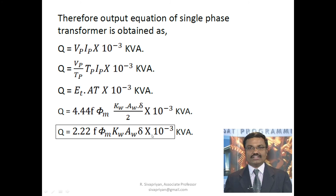This output equation Q = 2.22×f×φm×Kw×Aw×δ×10⁻³ kVA is the same for both single-phase core type and single-phase shell type transformers. Here φm is the maximum value of flux in the core. Instead of φm, we can also use Bm×Ai, where Bm is the flux density and Ai is the net iron area. This gives the generalized output equation for single-phase transformers.